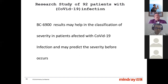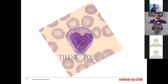In summary, the BC 6900 results may help in the classification of severity in patients affected with COVID-19. Infection severity can possibly be predicted before it occurs — we have to double-check all these results for sure. Thank you for your attention. This is a lymphocyte from a young lady, 17 years old, with a mononucleosis infection caused by Epstein-Barr virus. I took the photo myself — real, no Photoshop — and it has the form of a heart. Thank you so much.